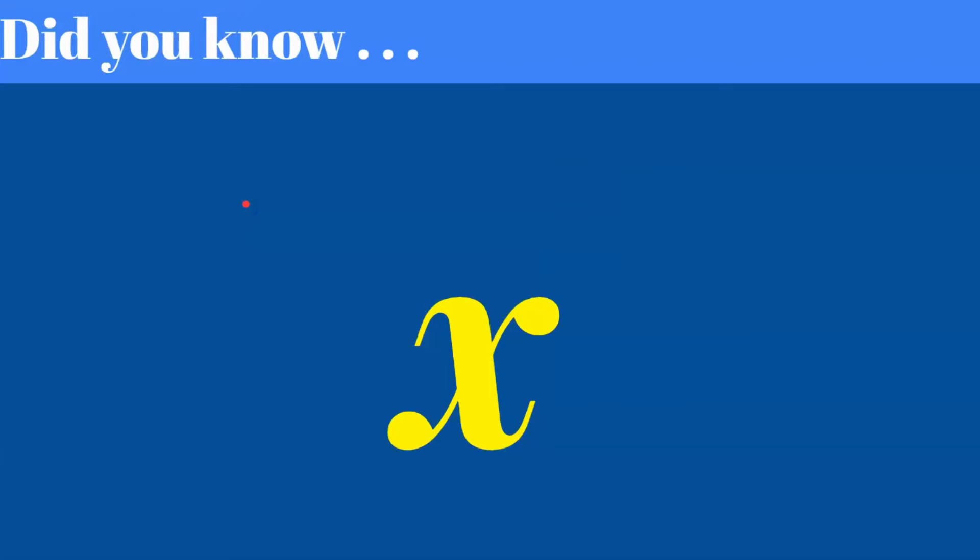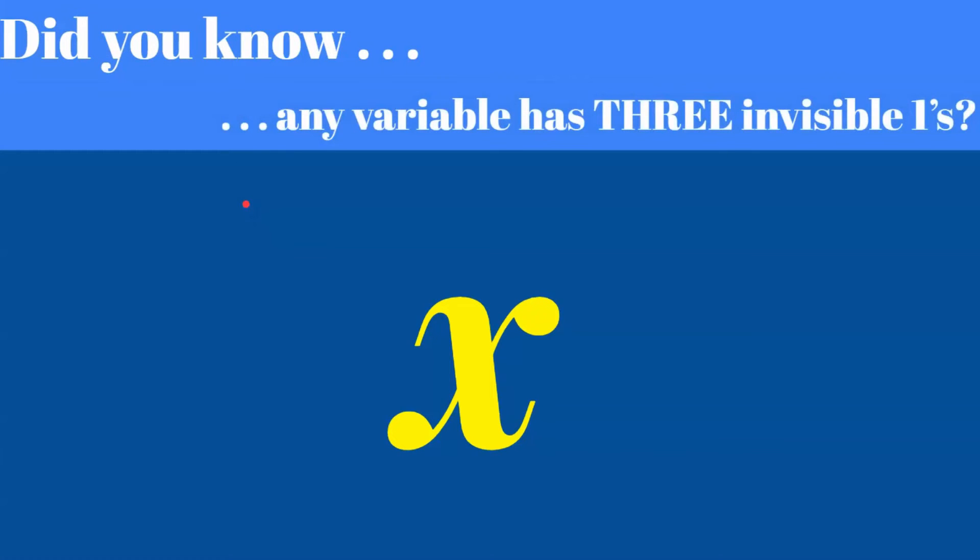Did you know that any variable has three invisible ones? So here's x and I'm going to show you the three invisible ones.